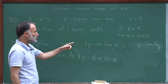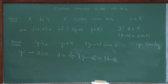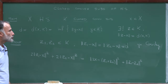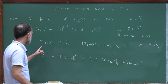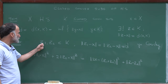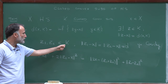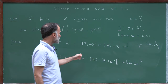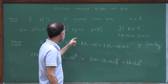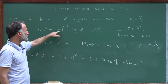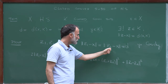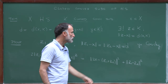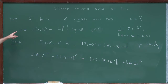Now let me prove uniqueness. Assume Z1 and Z2 in K both attain the infimum, meaning ‖Z1 − X‖ = ‖Z2 − X‖ = D. Again I will use the parallelogram identity with Z1 − X and Z2 − X.